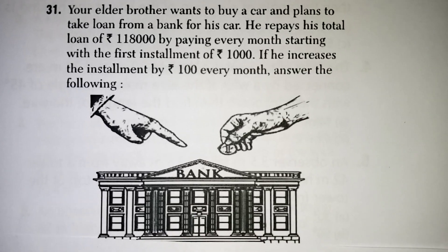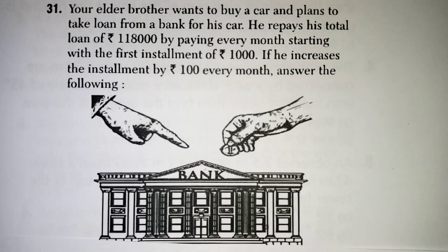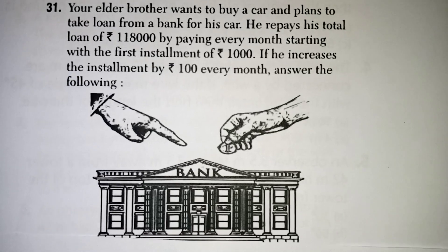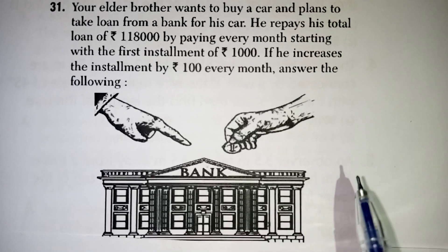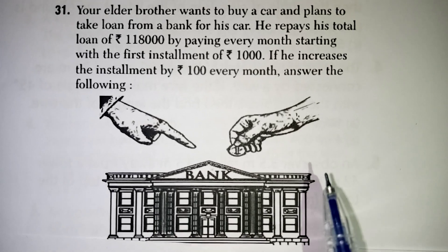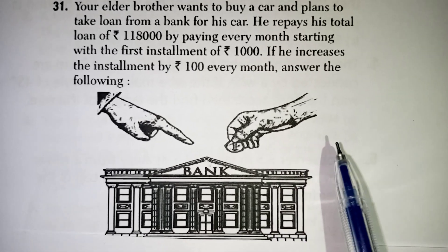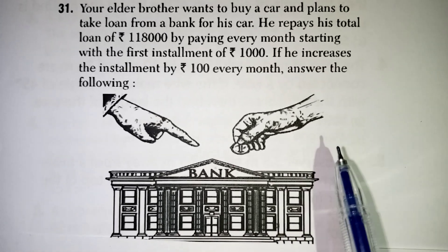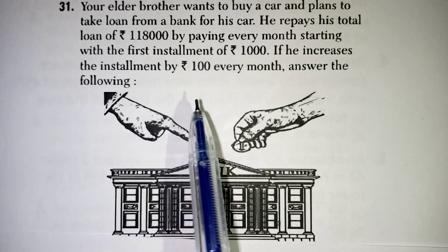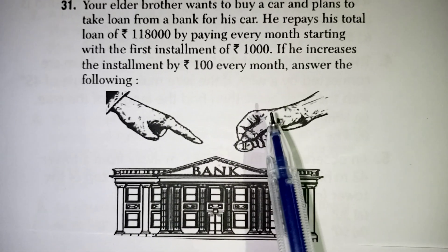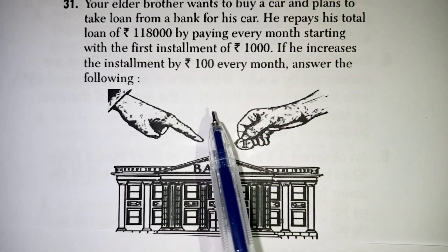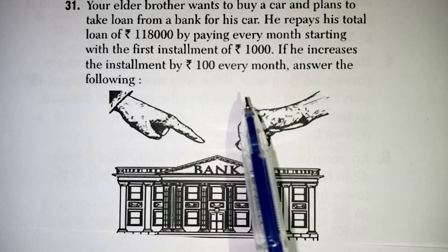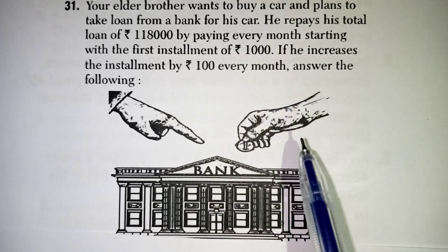Hi students, in this video we are going to learn an important case study from the arithmetic progression chapter. Look at the question. Your elder brother wants to buy a car and plans to take a loan from a bank for his car. He repays his total loan of 1,18,000 by paying every month starting with the first installment of Rs. 1000. If he increases the installment by Rs. 100 every month, answer the following questions.